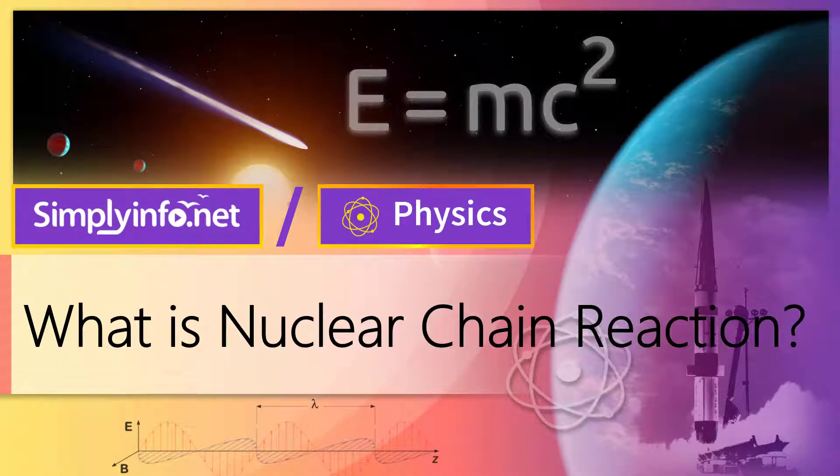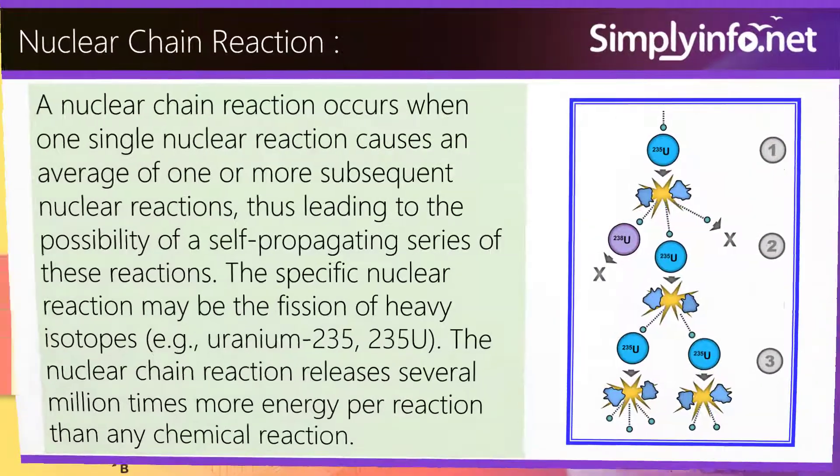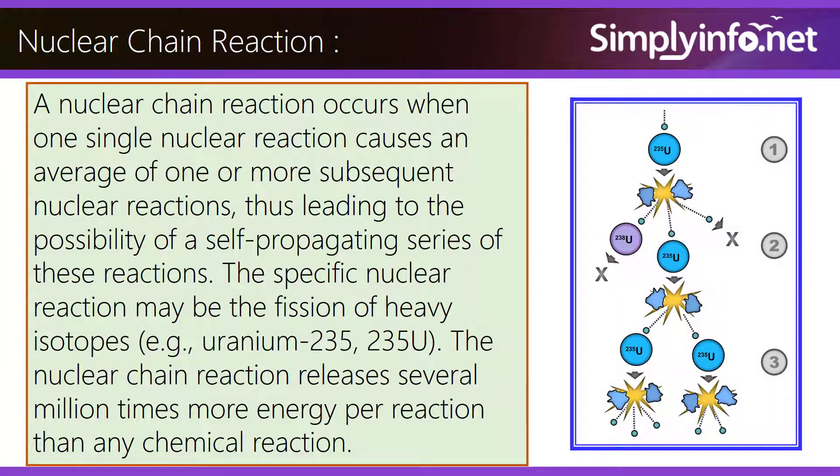What is Nuclear Chain Reaction? A nuclear chain reaction occurs when one single nuclear reaction causes an average of one or more subsequent nuclear reactions.